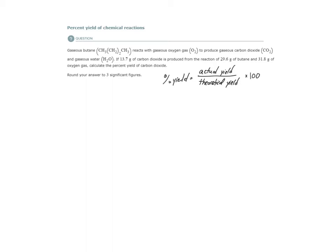So in this problem, they want us to find the percent yield of carbon dioxide. What do we need to find percent yield? You need the actual yield and you need the theoretical yield. When you look at the problem, they give us the actual yield. They say 13.7 grams of carbon dioxide is produced from the reaction. But how much CO2 were we supposed to make theoretically? We have to find that.